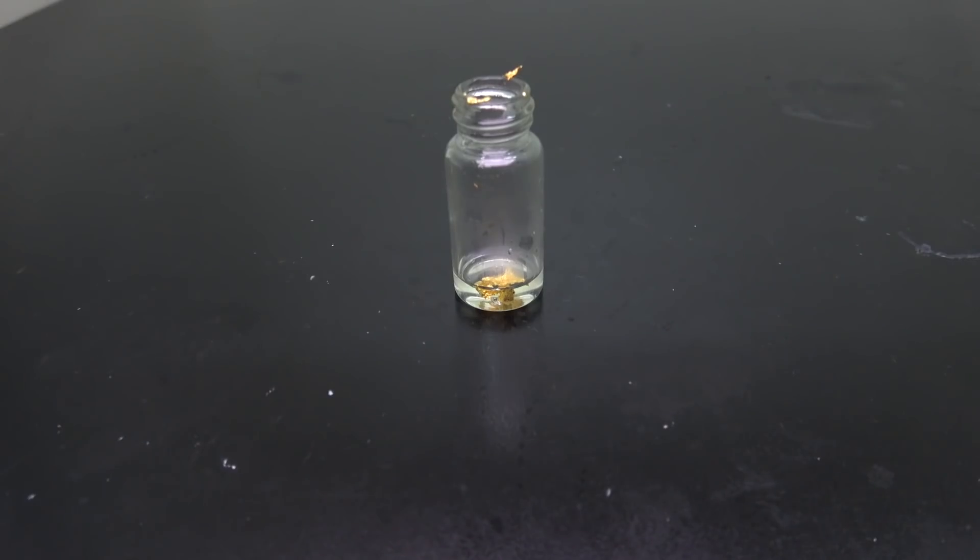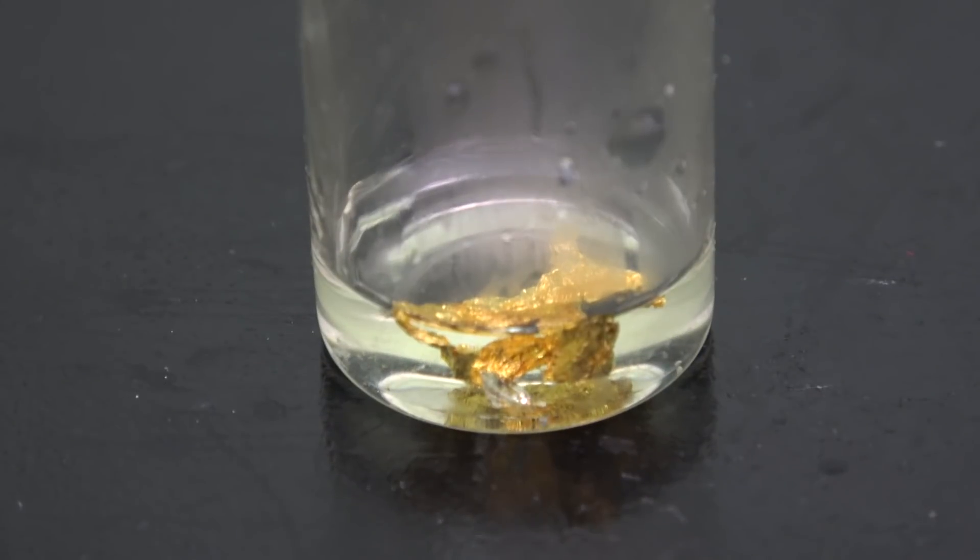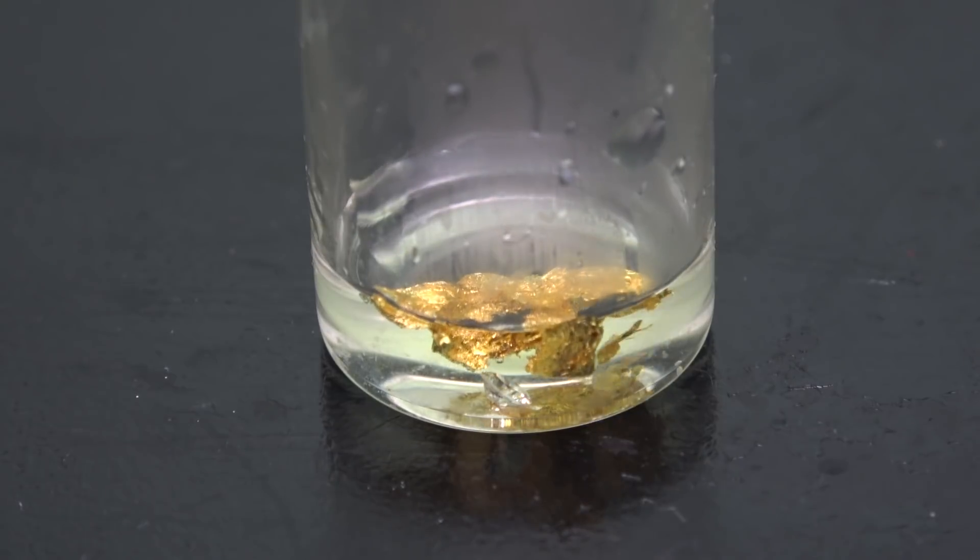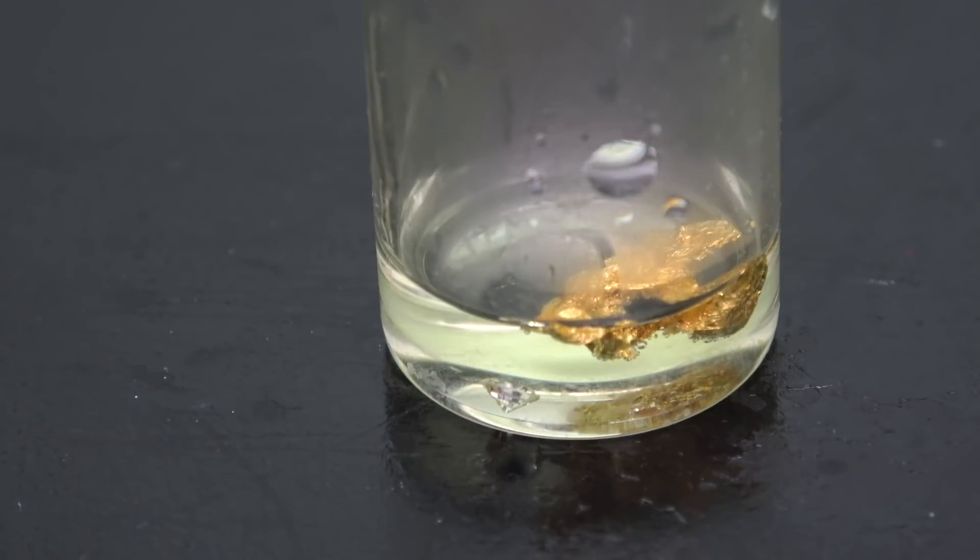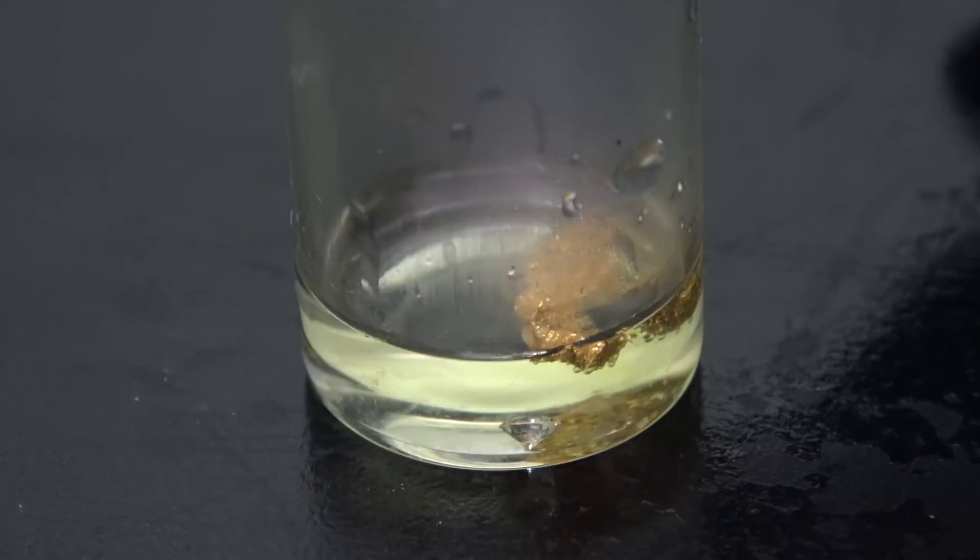And as you can see, hydrochloric acid alone is incapable of dissolving gold. Not until I add a few drops of nitric acid. Soon there are bubbles that appear on the surface of gold and the solution is gradually turning yellow.